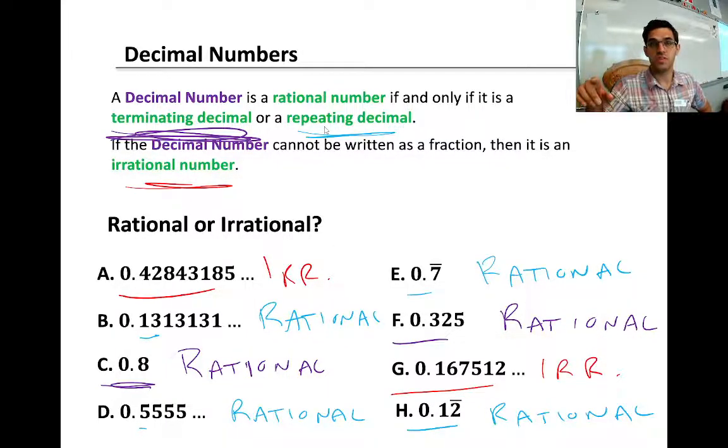Repeating decimals are decimals that have a repeating pattern to them. So for example, B and D and E and H are all examples of repeating decimals, and so they are all rational. In B we have one three that repeats. In D we have five that repeats. In E we have a bar over the seven which means it's 0.777 and the seven just keeps repeating. In H we have a bar over the two. So the number is 0.122222. The two repeats. So that would also count as rational. Even though there is a one there, the two repeats, so it's okay. It's rational. We can write it as a fraction.